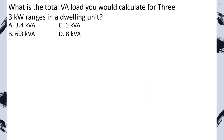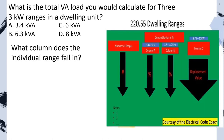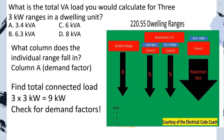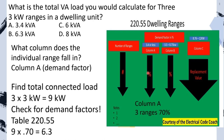Practice problem: What is the total VA load for three 3 KW ranges in a dwelling unit? What column does our individual range fall in? It's 3 KW — Column A, so we'll be applying a demand factor. Find total connected load: 3 ranges multiplied by 3 KW equals 9 KW. Check for demand factors: from the left-hand side find 3 ranges, cross to Column A, the demand factor is 70%. Multiply: 9 KW multiplied by 0.70 gives our new reduced load. We select B.